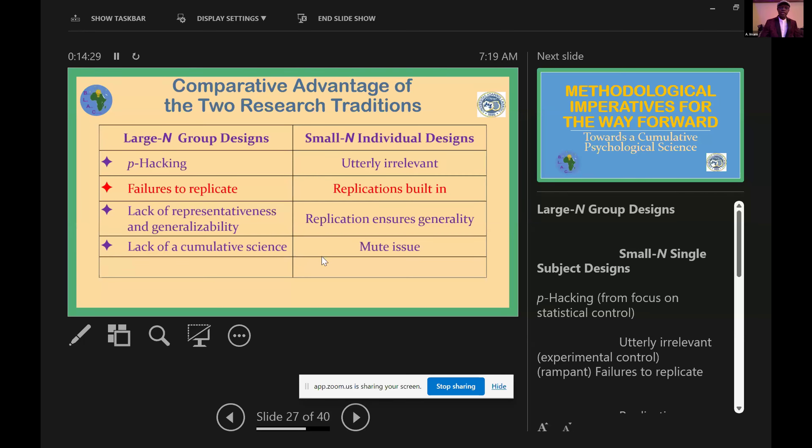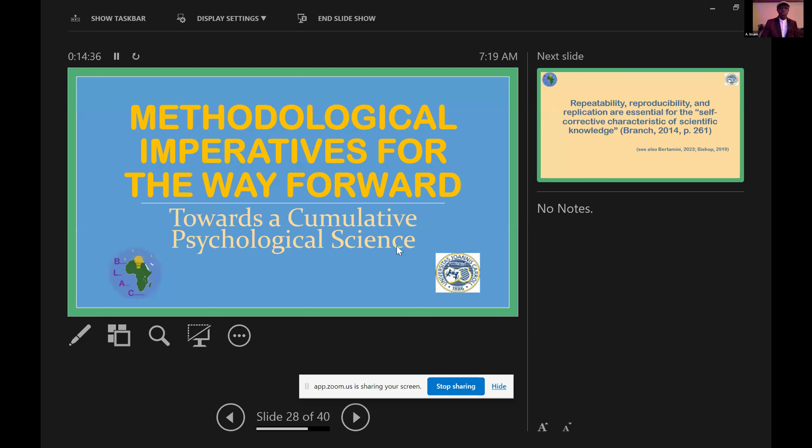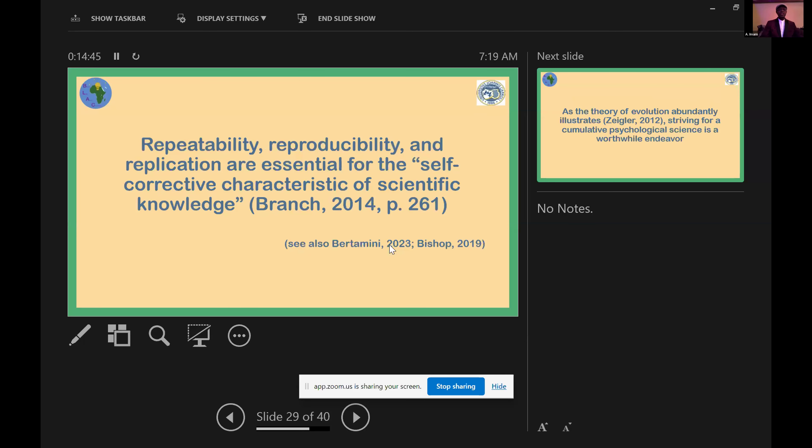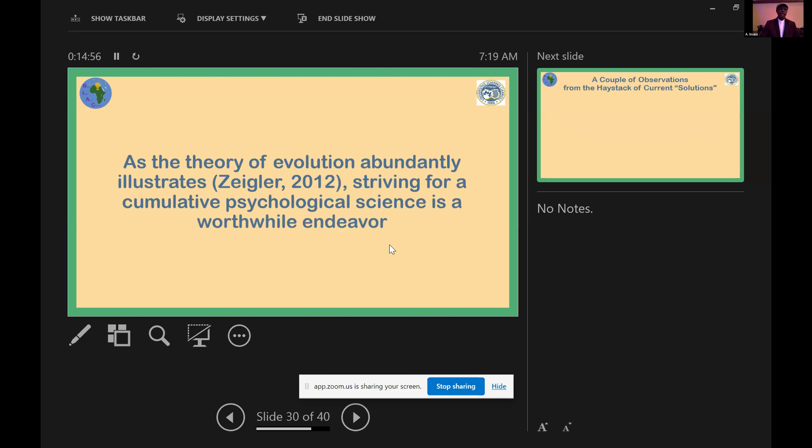The methodological imperatives for the way forward towards accumulative psychological science is based on the notion that repeatability, reproducibility and replication are essential for the self-correcting character of scientific knowledge. As the theory of evolution abundantly illustrates, striving for accumulative scientific psychological science is a worthwhile endeavor.